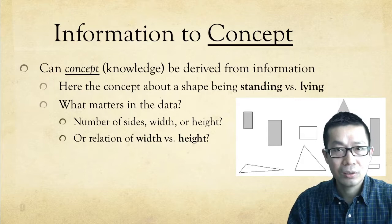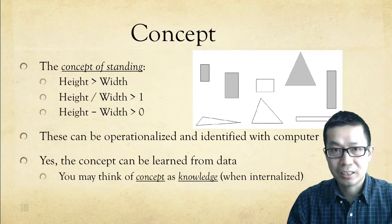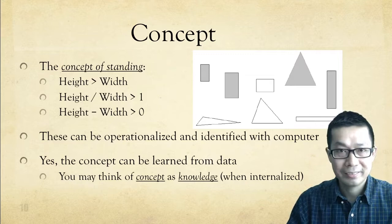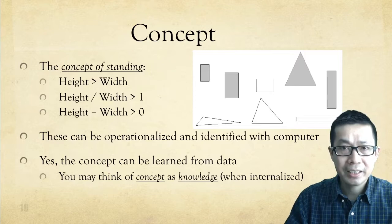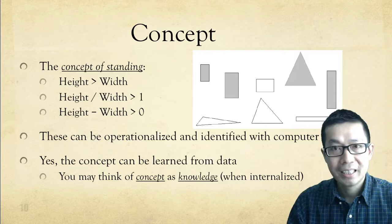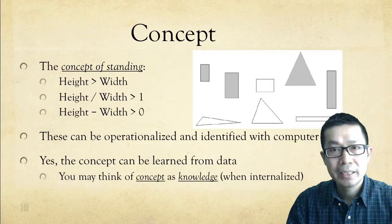Or is it based on some relation between width and height? It turns out, as our own intelligence can easily tell from the data, a shape is standing when height is greater than width. Mathematically, this is when height divided by width is greater than 1, or height minus width is greater than 0. Given this mathematical simplicity, the concept of standing can be quantified, operationalized, and identified with the computer, which is good at crunching numbers. So in the end, the concept can potentially be learned from data when the relations are examined.